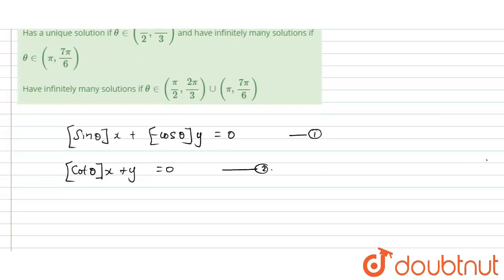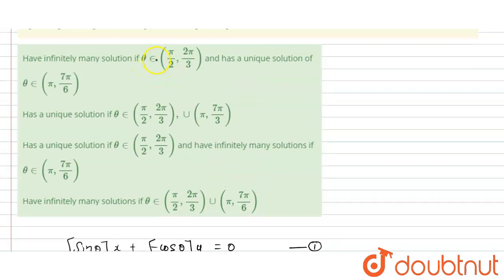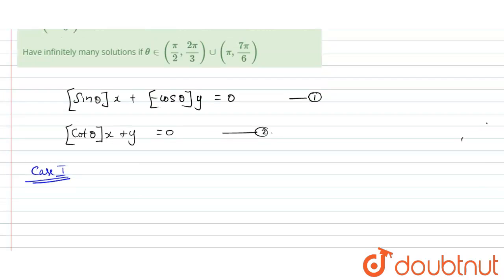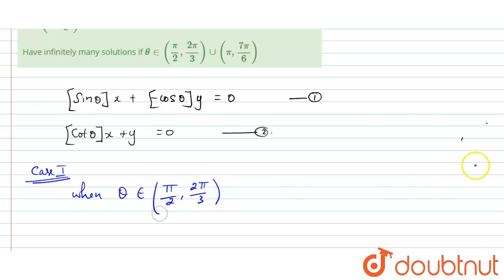In our condition, θ belongs to the interval (π/2, 2π/3) and (π, 7π/6). So I'm going to take Case 1 first. Case 1: when θ belongs to (π/2, 2π/3).